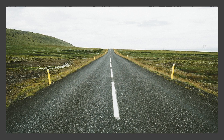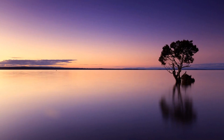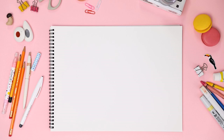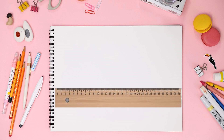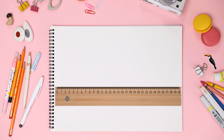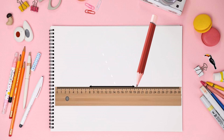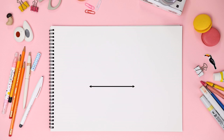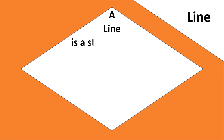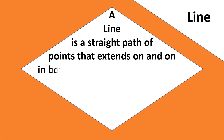Have you seen the road? Have you seen the horizon? Both are examples of a line. We can say a line is a straight path of points.